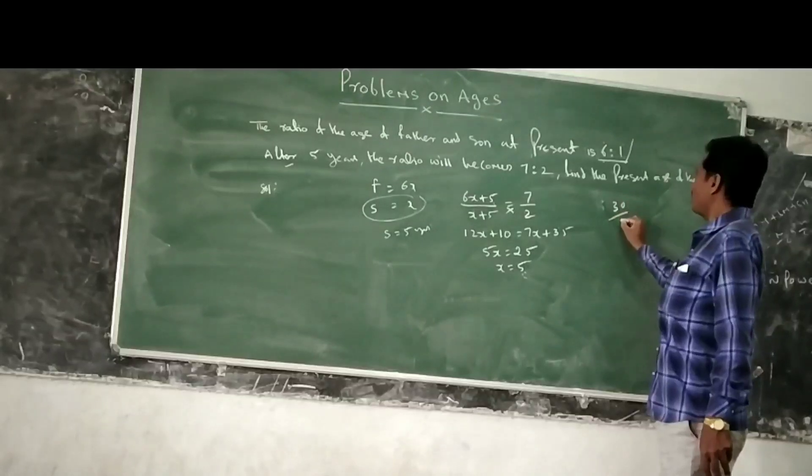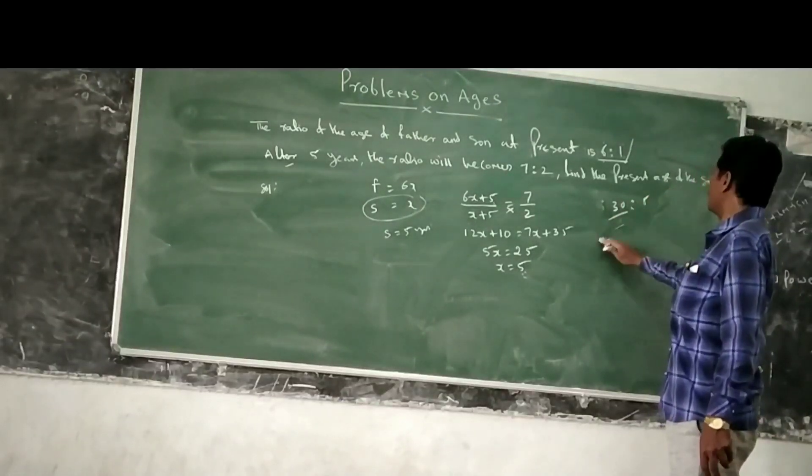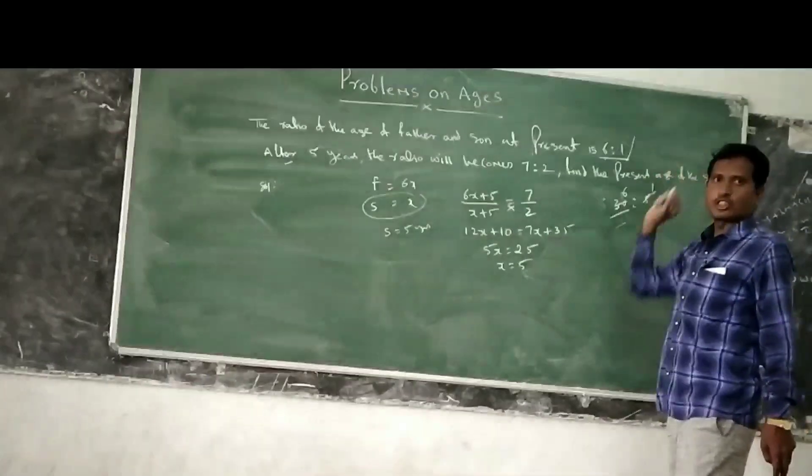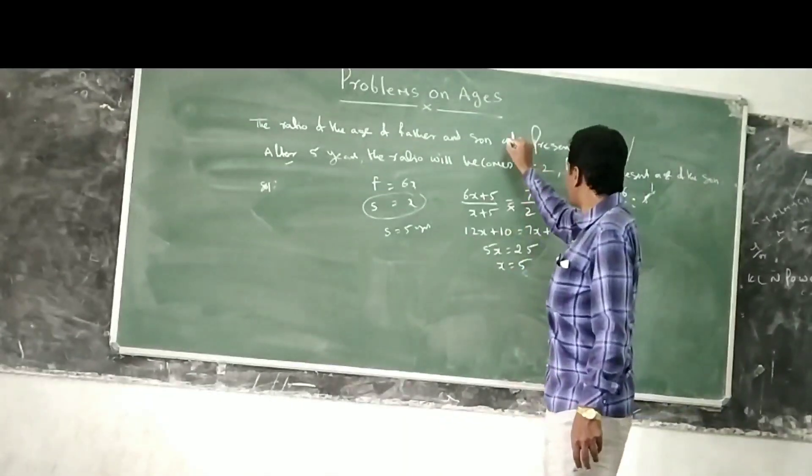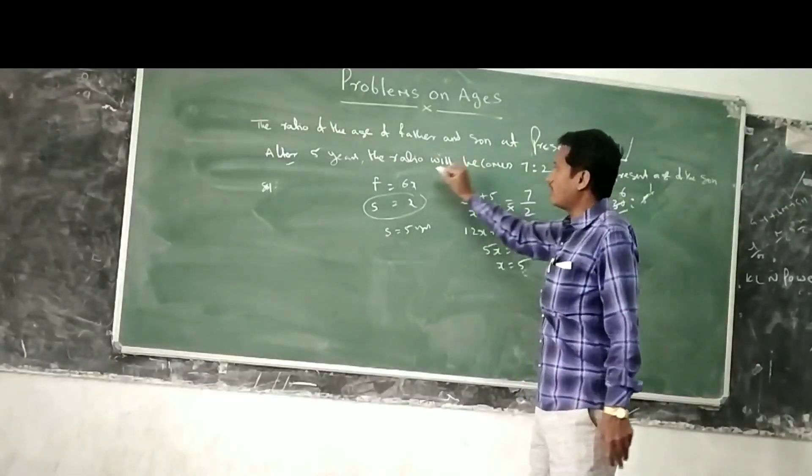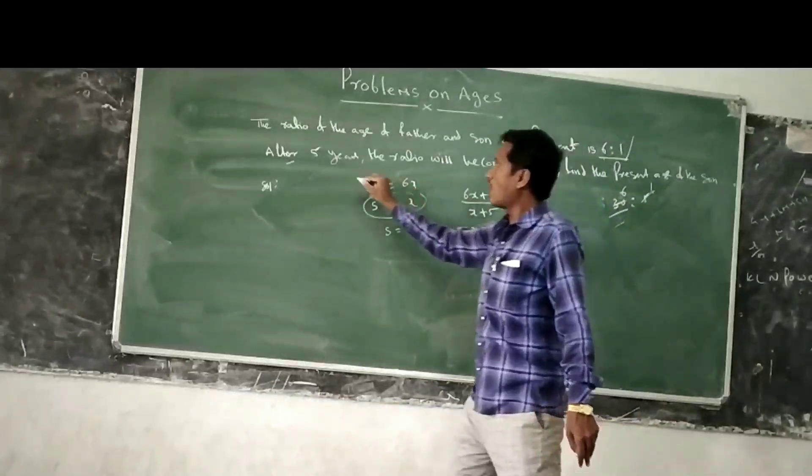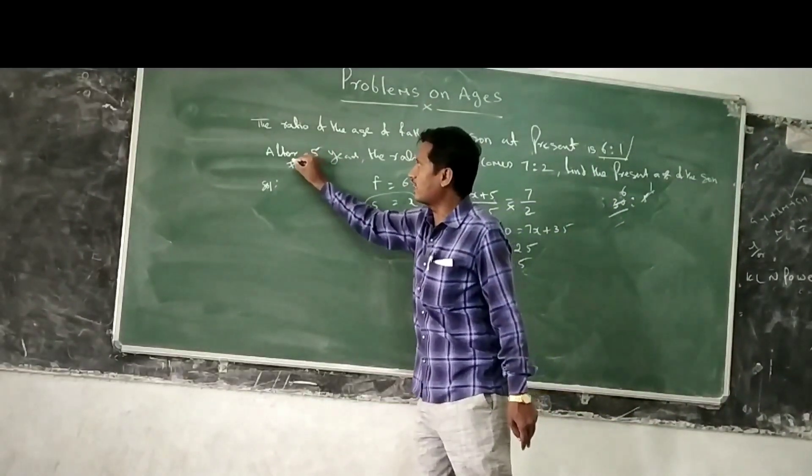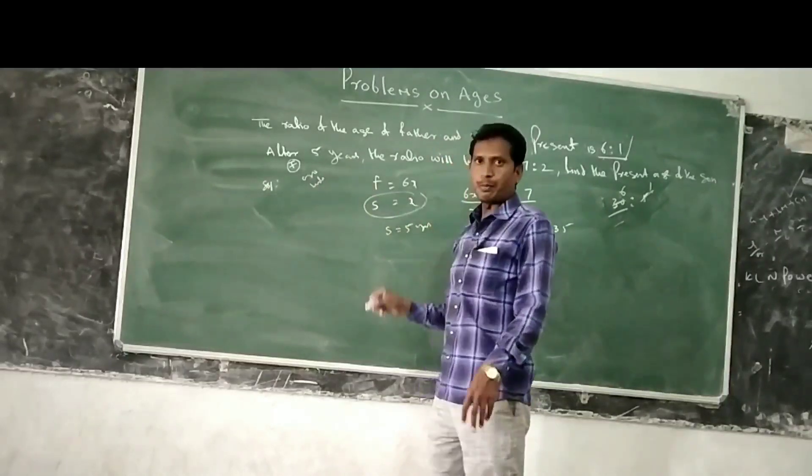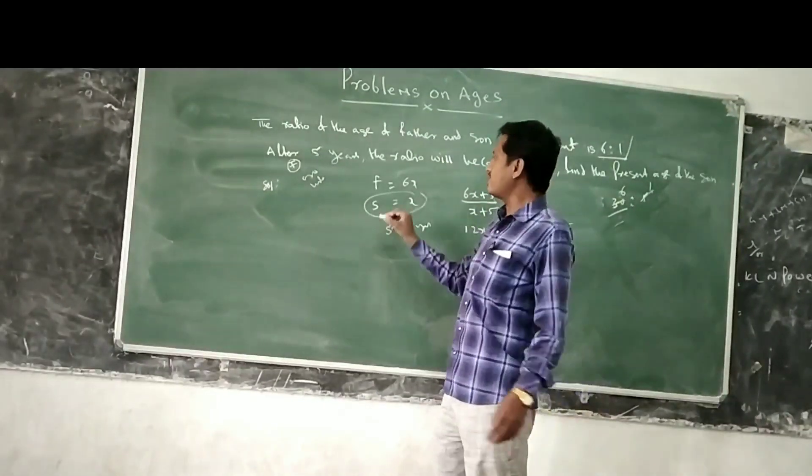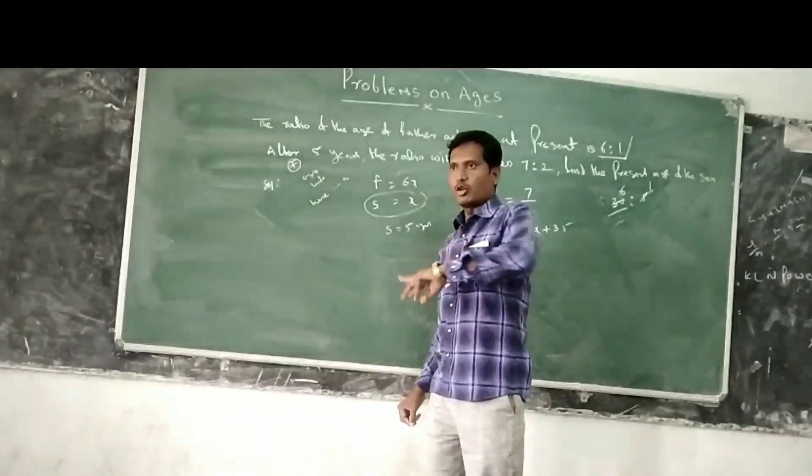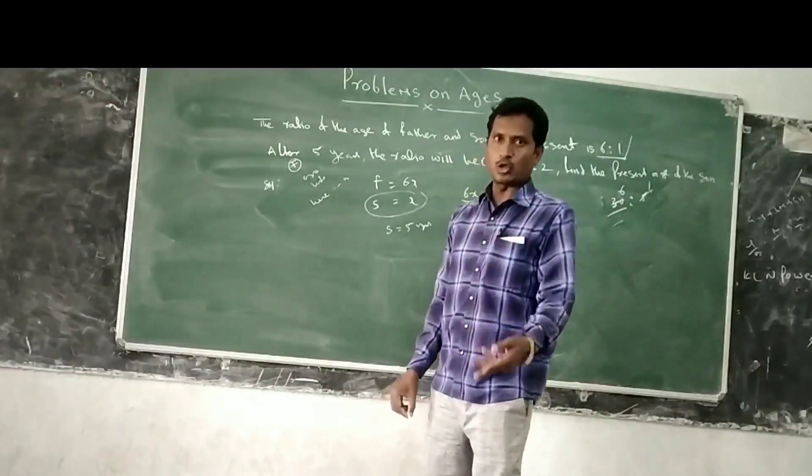30 to 5, the ratio is 6 to 1. If the ratio is 6, then the father is 6x, son is x. After is addition. Before is subtraction. Okay, you have any doubts?